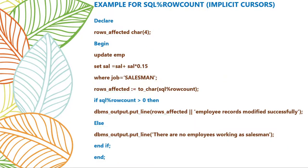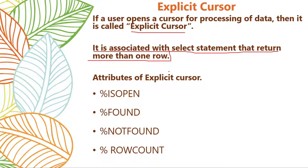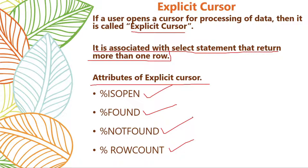Now we will learn about explicit cursors. As the name suggests, if a user opens a cursor for processing data, then it is called an explicit cursor — a user-defined cursor. It is associated with a SELECT statement and returns more than one row. It has attributes like %ISOPEN, %FOUND, %NOTFOUND, and %ROWCOUNT.